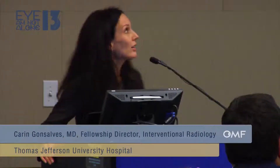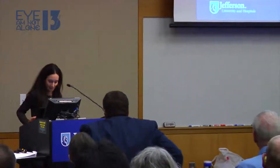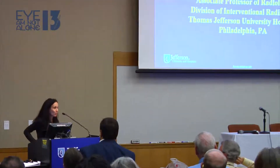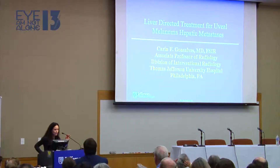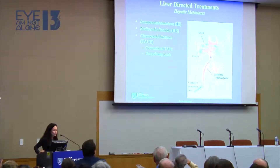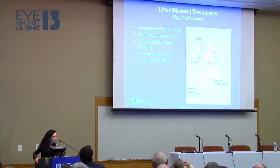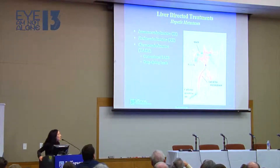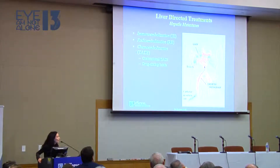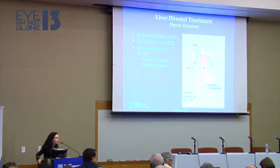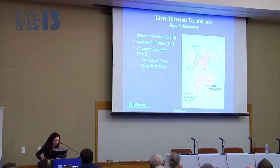I'm going to be talking about liver-directed treatment of uveal melanoma and hepatic metastases, hopefully in 10 minutes. I'm going to be discussing three types of liver-directed therapies: immunoembolization, radioembolization, and chemoembolization — both conventional chemoembolization and chemoembolization with drug-eluting beads.